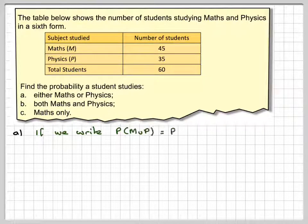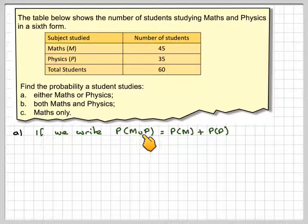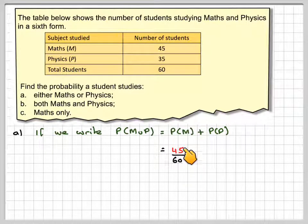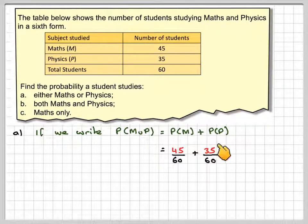So if we write the probability of M union P, like our last video, that's the probability of M plus the probability of P, M standing for maths, P standing for physics. That's going to be 45 out of 60 plus 35 out of 60. If we add those together we'd get 4 over 3.